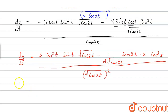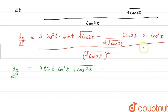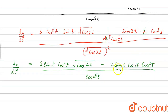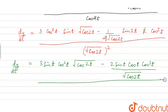After simplifying, dy/dt equals 3 sin t · cos²t · √(cos 2t) minus, after the 2s cancel, sin 2t written as 2 sin t cos t multiplied by cos³t. The denominator is cos 2t. We can now write the numerator as 3 sin t cos²t · √(cos 2t) minus 2 sin t cos⁴t, with denominator cos 2t.